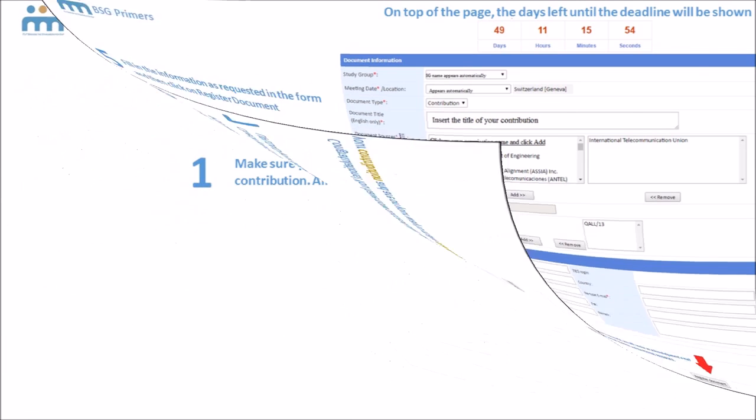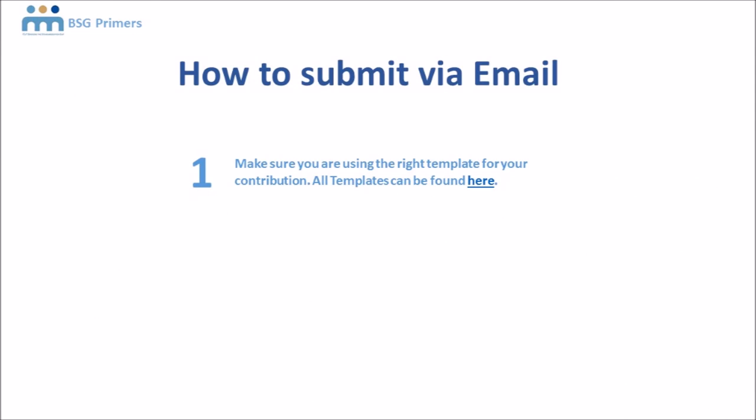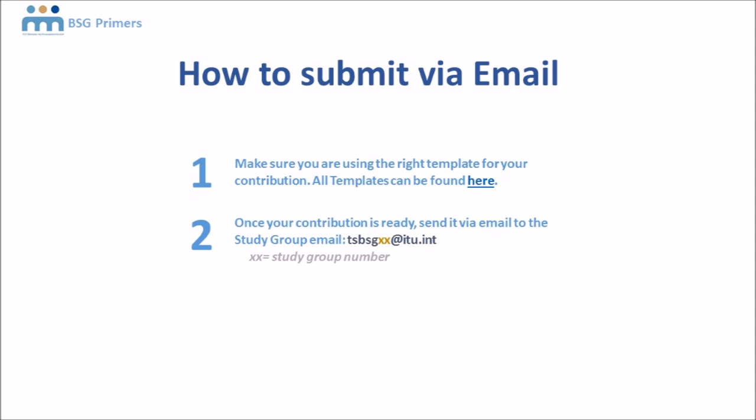The other way to submit a contribution is via email. You need to find the template that is to be used for that study group, which you can find on the main page of the study group. Use that template to insert the text of your contribution, and when it's ready, simply send it via email to the study group email address: tsbsg[studygroup number]@itu.int. For example, for Study Group 3, the email address is tsbsg3@itu.int.